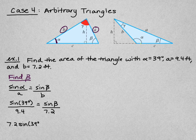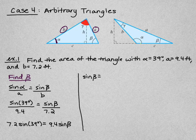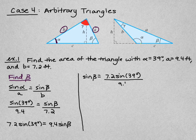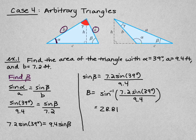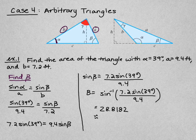Cross-multiplying gives 7.2 times sine of 39° equals 9.4 times sine of beta. Solving for sine of beta: sine of beta equals 7.2 times sine of 39° divided by 9.4. Taking the inverse sine of that gives approximately 28.8182°, which we round to approximately 29°.